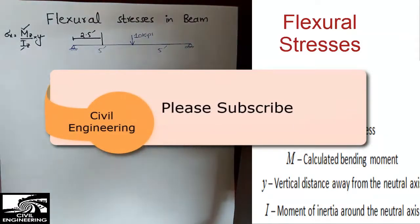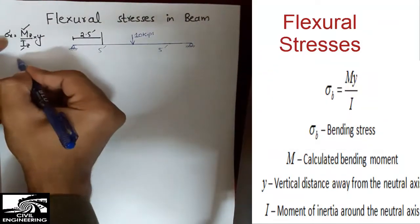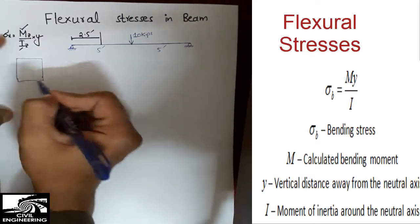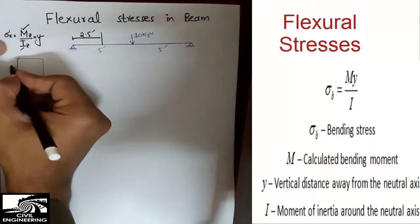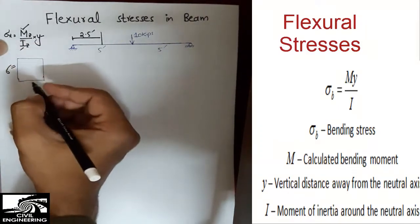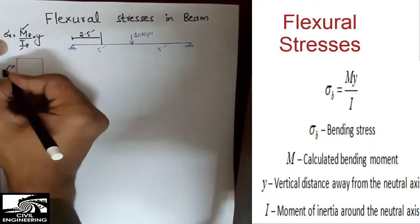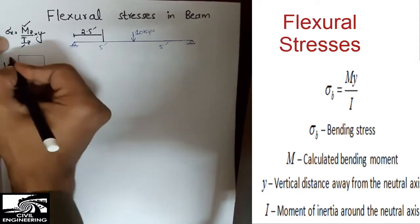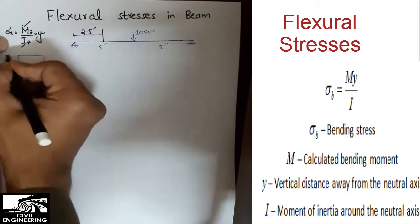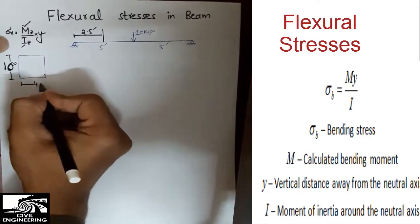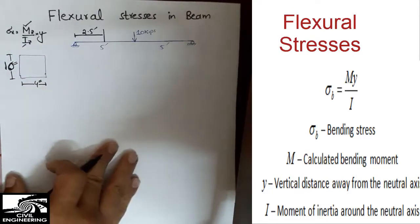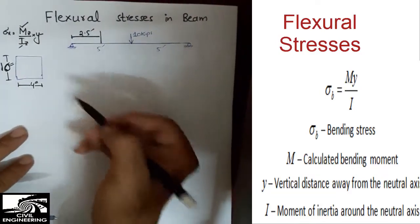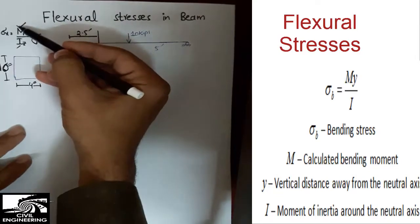The cross-section of the beam is given as 10 inches in height and 4 inches in width. To find the flexural stresses, we first have to find the moment at the point of interest.